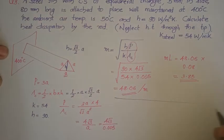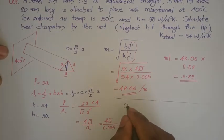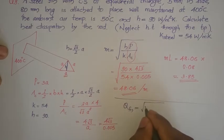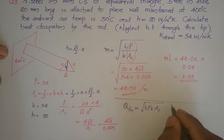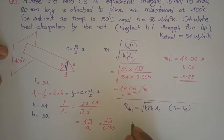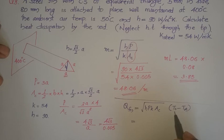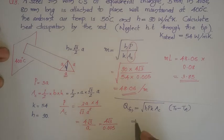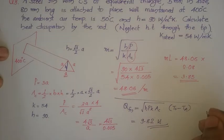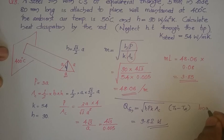Considering it as a long fin, the heat transferred by the fin is Q = √(h·P·k·Ac) × (T₀ − T∞). Substituting all values — h, P, k, Ac given; T₀ = 400°C and T∞ = 50°C — you get Q = 9.82 watts.